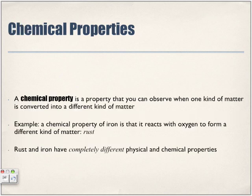Chemical properties are properties that you can observe when one kind of matter is converted into a different kind of matter. We're starting off with one type of substance and it changes completely. An example of a chemical property of iron is that it reacts with oxygen to form a different kind of matter — rust. When iron is exposed to oxygen over time, it starts to rust.